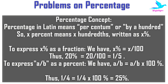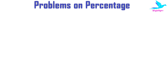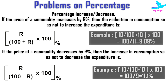Now let's talk about percentage increase or decrease. If the price of a commodity increases by R percent, then the reduction in consumption so as not to increase the expenditure is R by (100 + R) into 100 percent. For example, if a commodity price increases by 10 percent, then you will have to reduce consumption by 9.09 percent so that the overall expenditure remains the same.